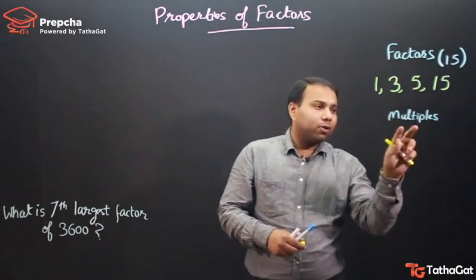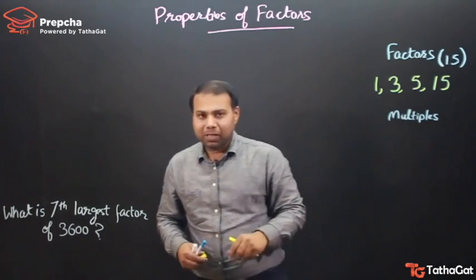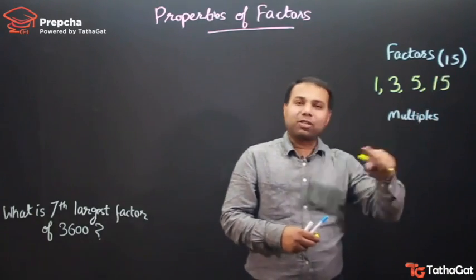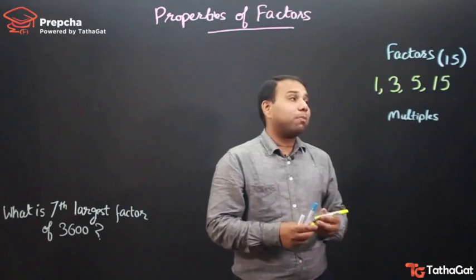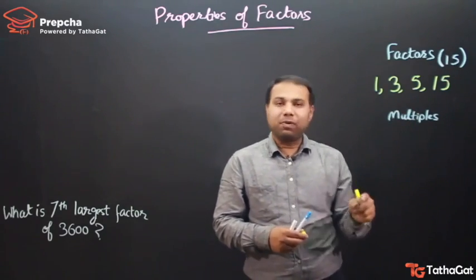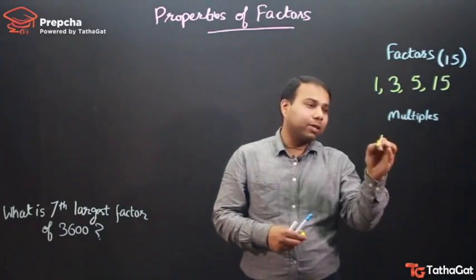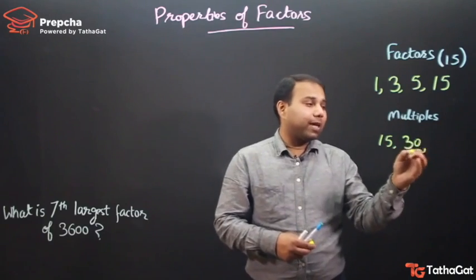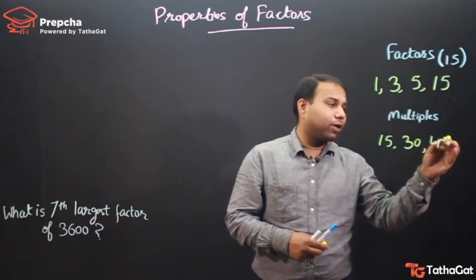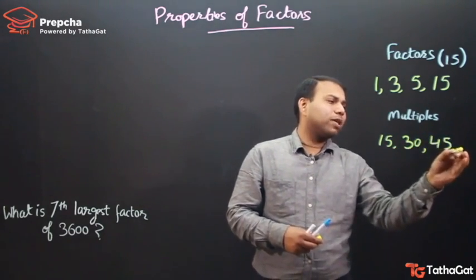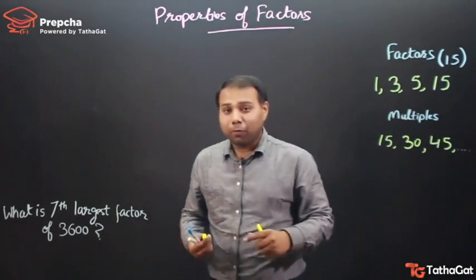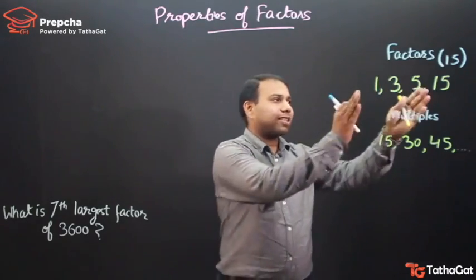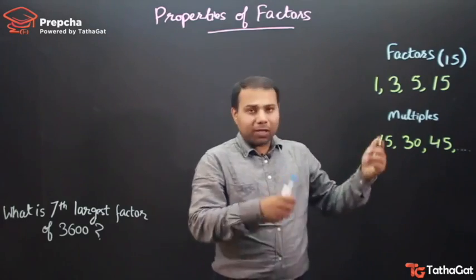Now if I think of multiples — what are multiples? Multiples are numbers which can be obtained by multiplying the number with some integer. The smallest multiple of 15 is 15 times 1, that is 15. After that 15 times 2 is 30, 15 times 3 is 45, and so on. There is no limit to the number of multiples. That is the basic difference: the number of factors is limited.